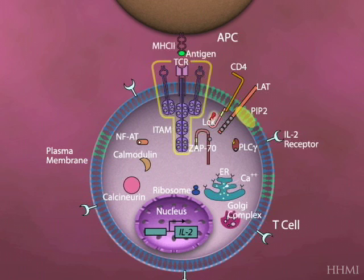What we're going to see thereafter is waves of calcium being produced in the cell. One of the major things that calcium does is that it binds a protein called calmodulin, which is just a binding partner. But the most important thing in terms of this particular cascade is it activates another enzyme called calcineurin.